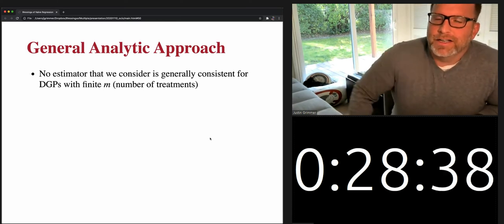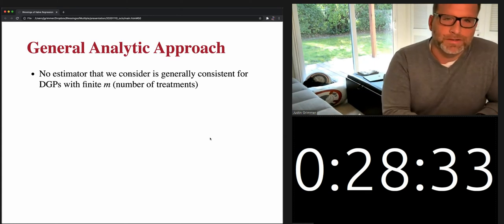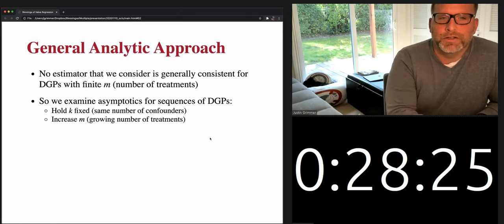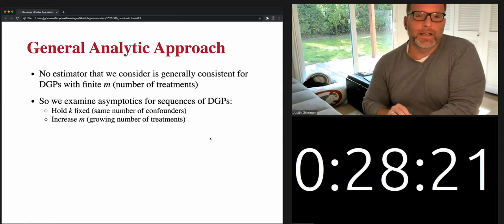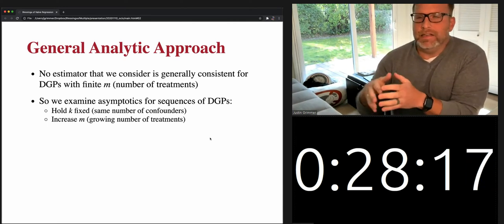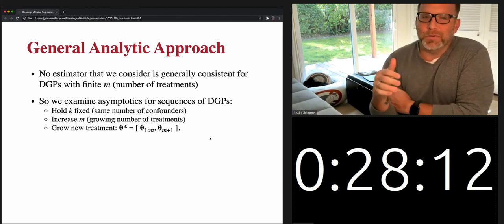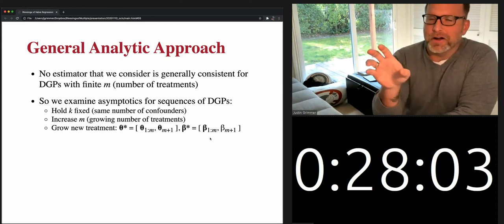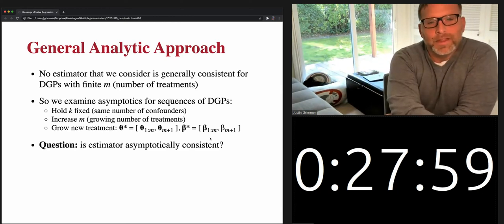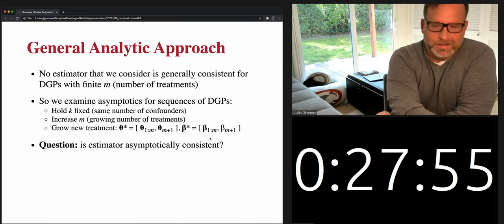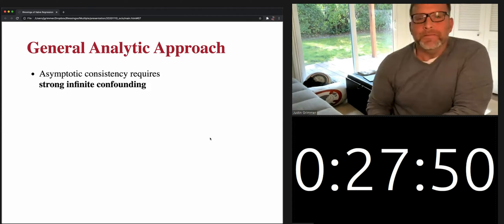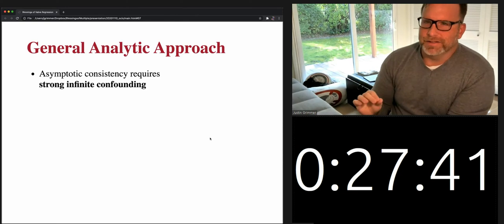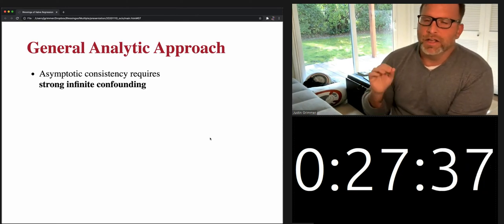One key result: no estimator we consider is consistent for any data-generating process when you have only a finite number of treatments. Even with an infinite number of observations, consistency only holds if you also grow the number of treatments. We examine asymptotics for sequences of data-generating processes holding the number of confounders fixed and increasing the number of treatments. We show that even here, to get asymptotic consistency you need a very strong condition called strong infinite confounding: all diagonal elements of theta-theta-prime go to infinity.